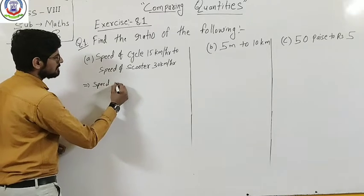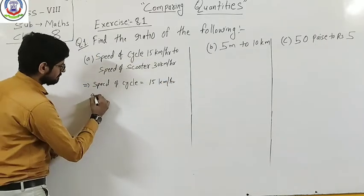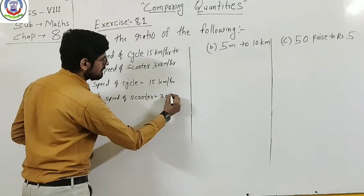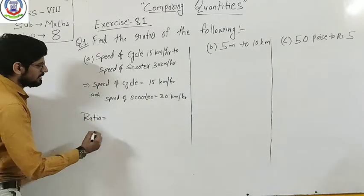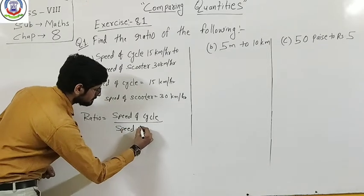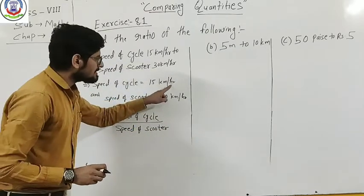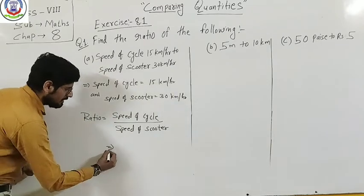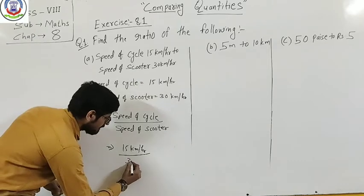Speed of cycle is equal to 15 km per hour, and speed of scooter is equal to 30 km per hour. So ratio is equal to speed of cycle upon speed of scooter. Speed of cycle is 15 km per hour and speed of scooter is 30 km per hour.